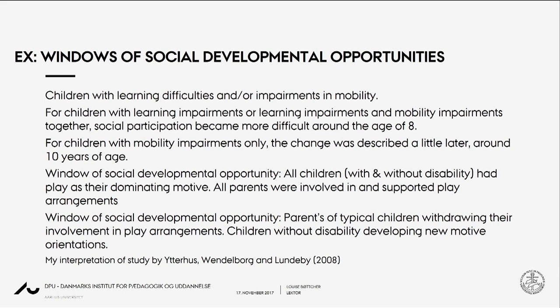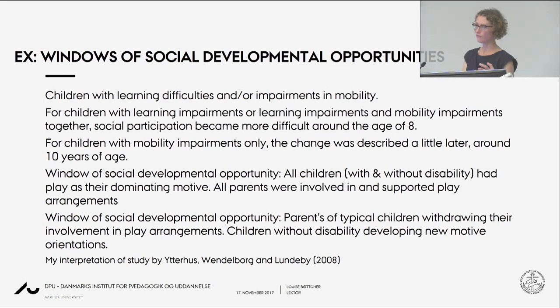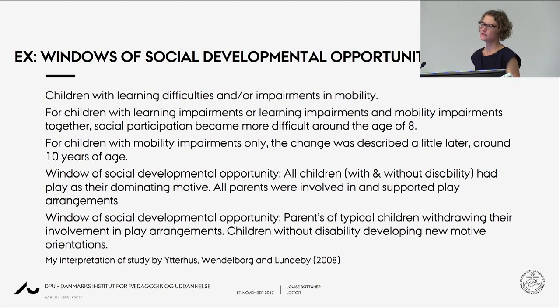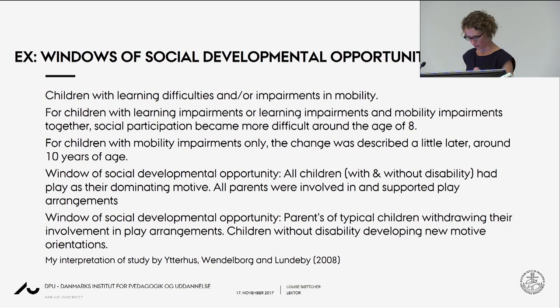In order to fully understand this contradiction, we need to include another important concept: motives. In the cultural historical understanding, motives are cultural historically formed interests and intentions. They arise from cultural values about what is a good life and what is appropriate development, reflected in institutional practices. As a child — or everybody, really — participates in these social institutions, these cultural values become conditions for one's own development of motives.